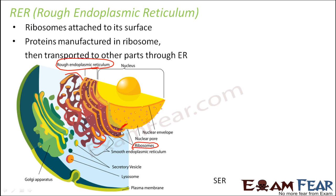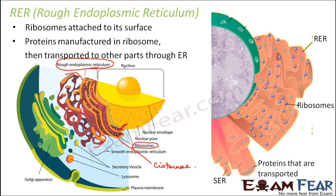Talking about its structure in a little more detail, rough ER is composed of cisternae and tubules. Those orange-like sac structures are called cisternae. They also have some tube-like tubular structures. When you observe even more closely, you can see the rough endoplasmic reticulum with ribosomes on it — the blue-colored structures.